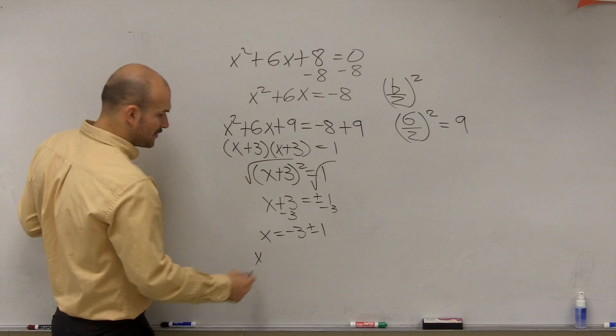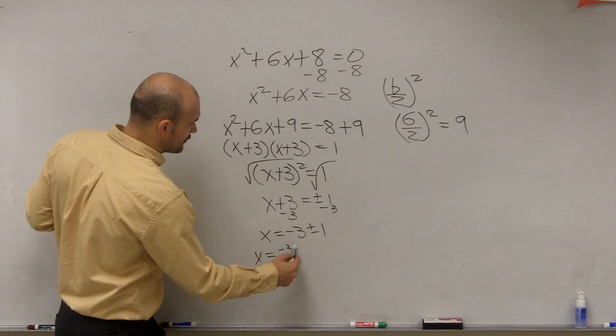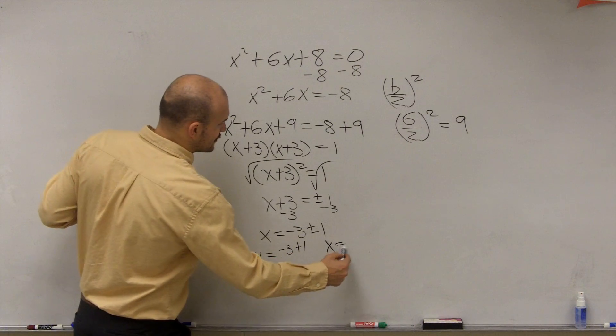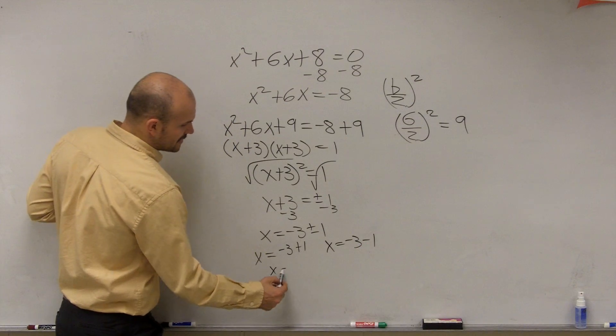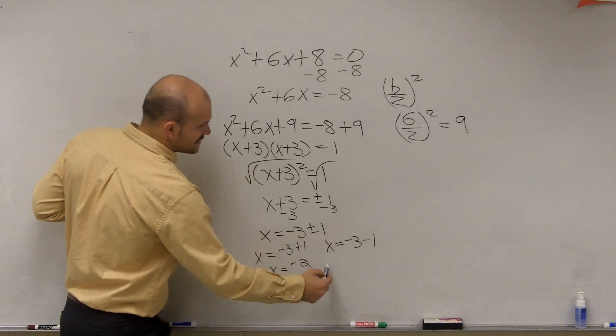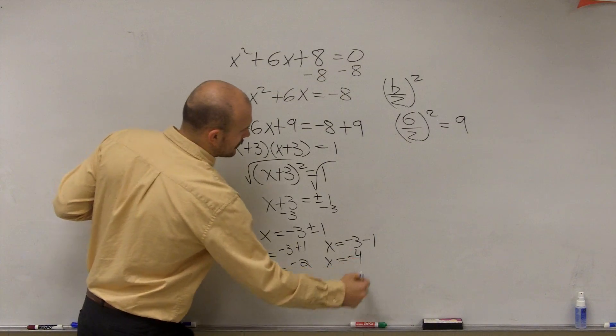So therefore, you can write this out separately if you'd like to. x equals negative 3 plus 1, and x equals negative 3 minus 1. Negative 3 plus 1, x equals negative 2. x equals negative 4.